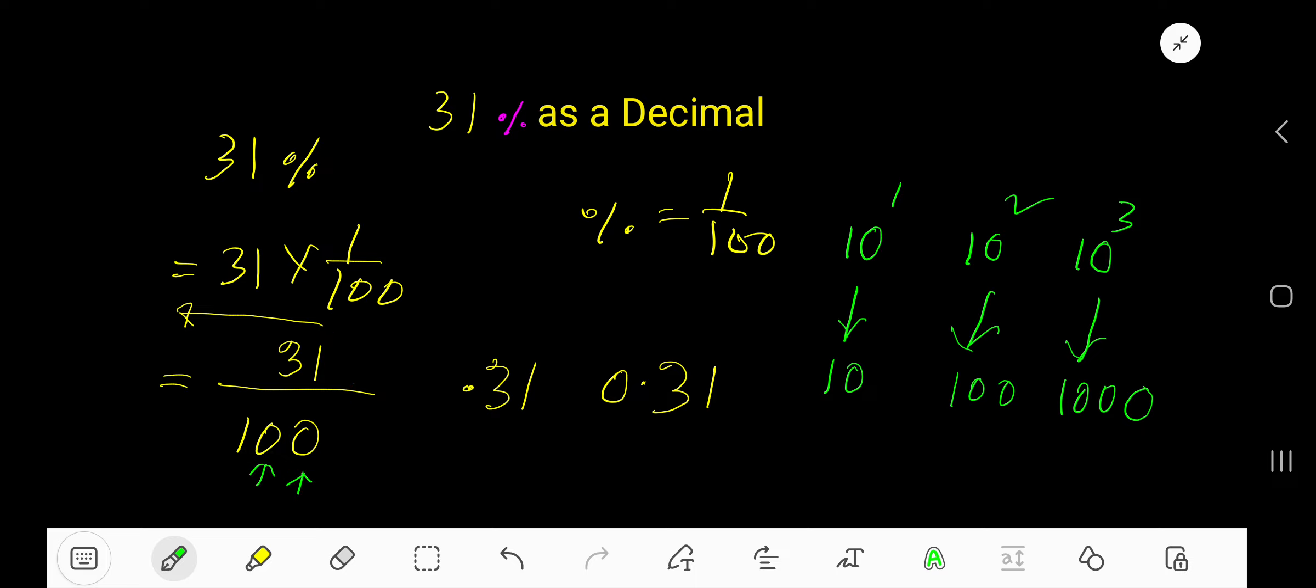Here the number of zeros is 2. So the decimal point will move from right to left 2 digits. Look, this is a whole number, so the decimal point will appear here.